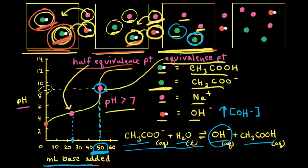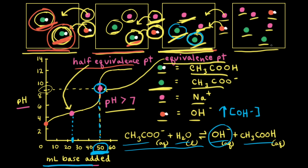Let's add some more sodium hydroxide past the equivalence point. Because there's no more acid present to react with the sodium hydroxide, in our fourth particulate diagram we see the added sodium cation and hydroxide anion, plus the two sodium cations and two acetate anions that were present at the equivalence point. This fourth particulate diagram represents excess base past the equivalence point.